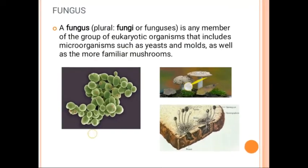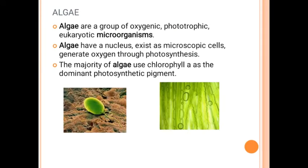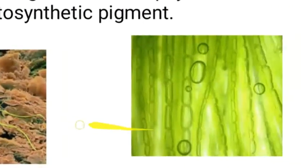Algae are green-colored, phototrophic, eukaryotic organisms. Their speciality is that they contain chlorophyll, which allows them to make food through photosynthesis. Algae are microorganisms, yet they can prepare their own food — they are autotrophs. You might have seen algae during the rainy season — the green-colored colonies. The majority of algae use chlorophyll as the dominant photosynthetic pigment.